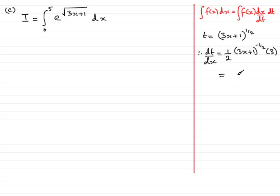Cleaning this up, we get 3 over 2, and the 3x plus 1 to the minus half is the same as putting the 3x plus 1 down below, but saying it's to the power of 1 half.